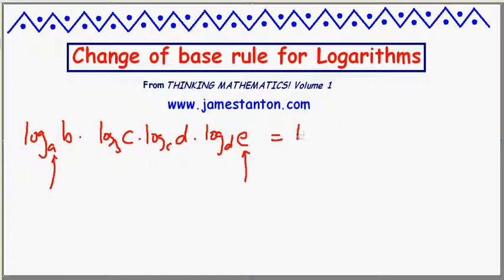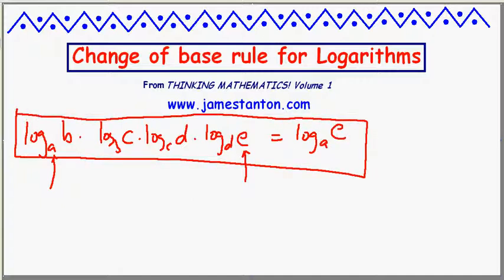I have an a that's not paired up and I have an e that's paired up. I claim this equals log base a of e. Can you prove that? And I did a product of four logs on the left. I claim this rule actually works for any number of logs.